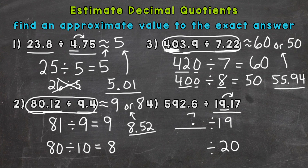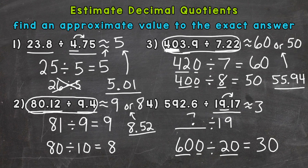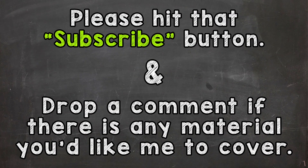Looking at 592.6, I would round to 600, which is compatible with 20. So 60 divided by 20 equals 3 — place the zero on the end to push the 3 to the correct place value — giving an estimate of 30. The exact answer, rounded to the hundredths place, is 30.91, so we got a great estimate. That's how you estimate decimal quotients. Thanks so much for watching — until next time!